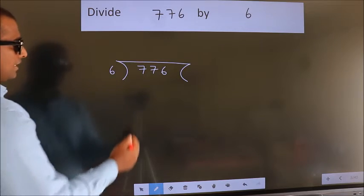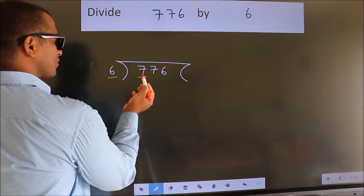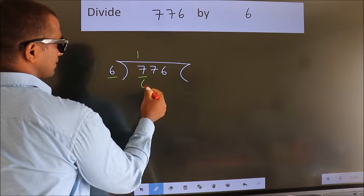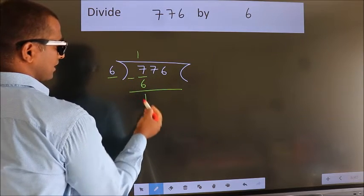Next, here we have 7, here 6. A number close to 7 in 6 table is 6 ones, 6. Now we should subtract. We get 1.